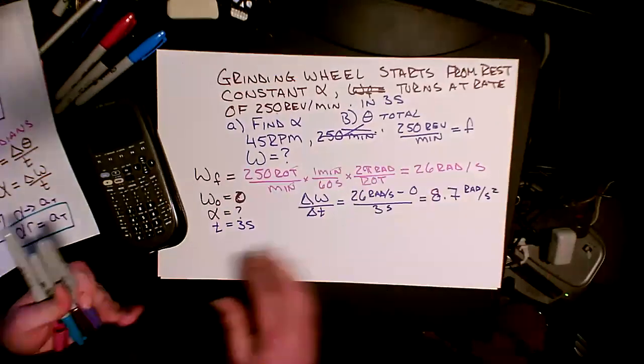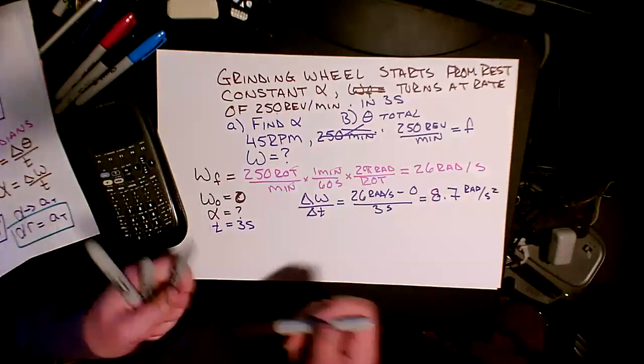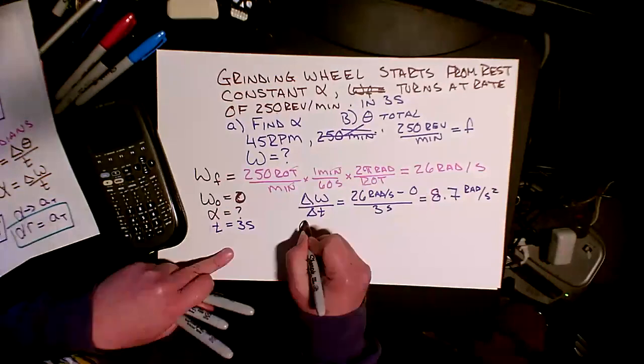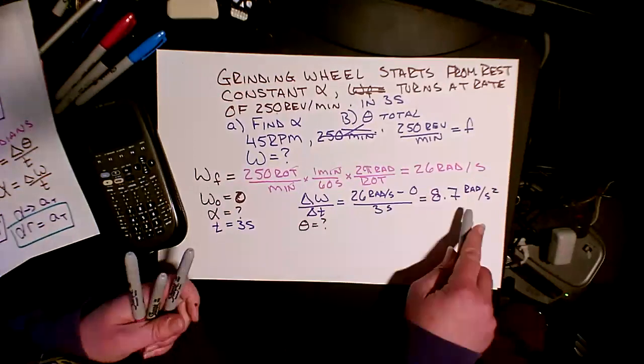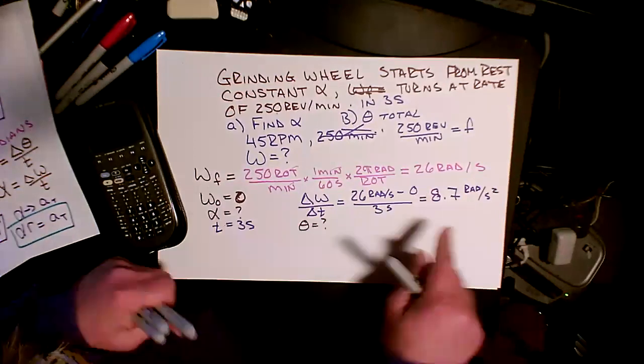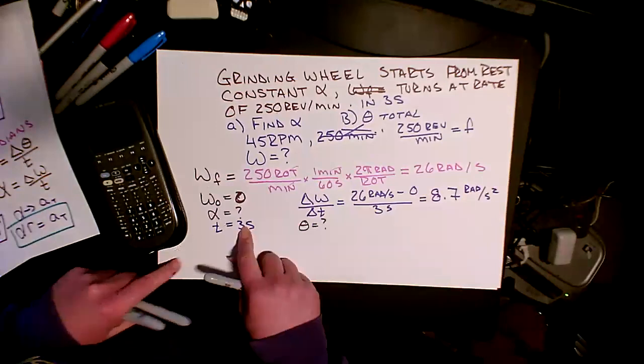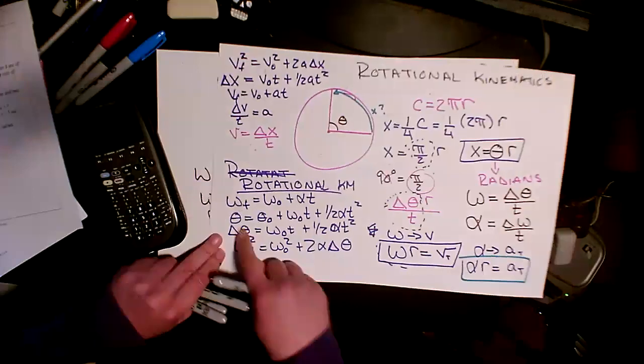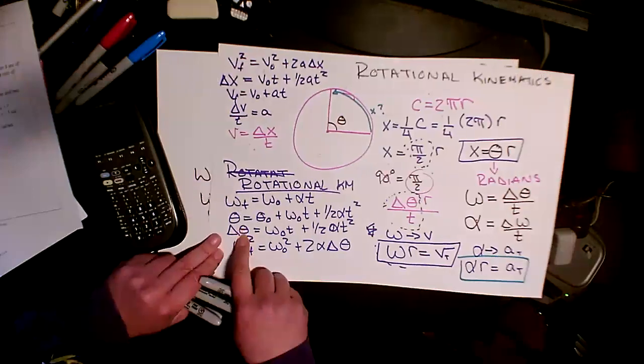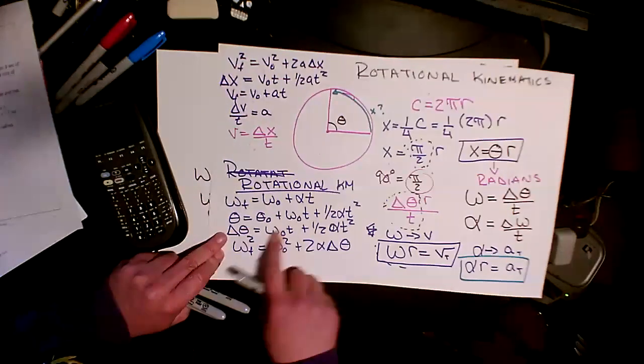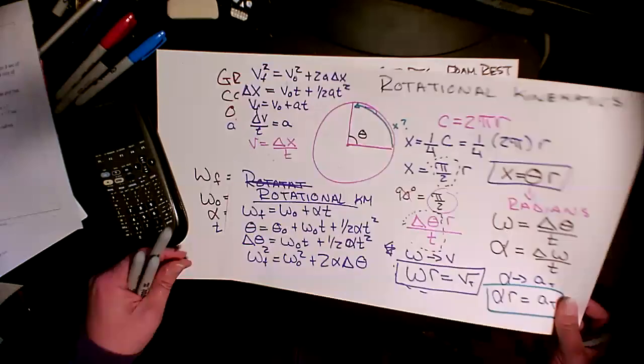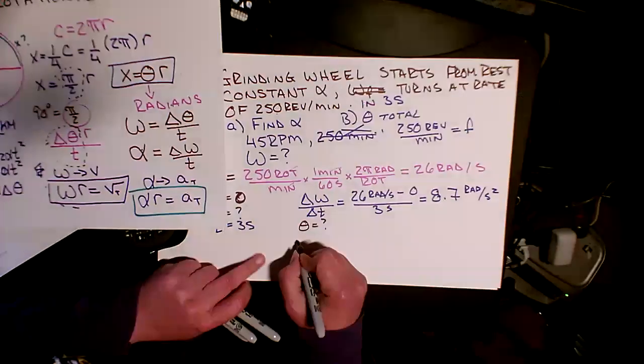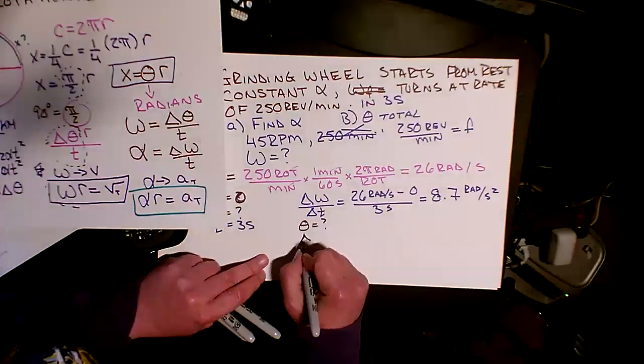So theta, theta then, what is theta? So I know my acceleration. I know my final and my initial, and I know my time. So let's take a look. I can come here to theta, where I rewrote this. So my theta, here's my initial, that was zero. I know my alpha, and I know the amount of time that happens. So that seems like that's going to be the most straightforward way to get there.